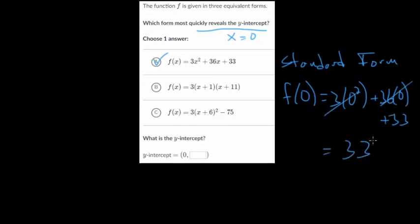So those go away and you get a y-value of 33, or a function value when x is zero of 33. So x is zero and y is 33 for this one.